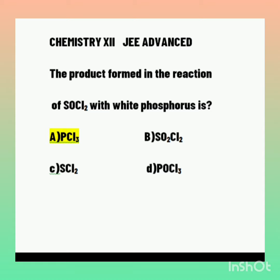White phosphorus is a translucent white waxy solid. It is poisonous, insoluble in carbon disulfide, and it glows in the dark — that is chemiluminescence. White phosphorus is less stable and therefore more reactive than the other solid phases under normal conditions.